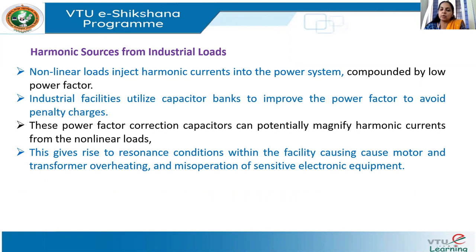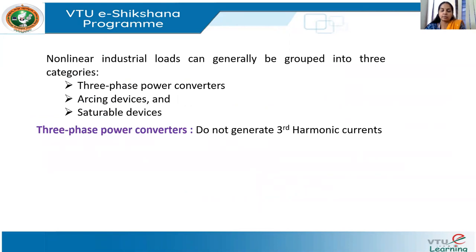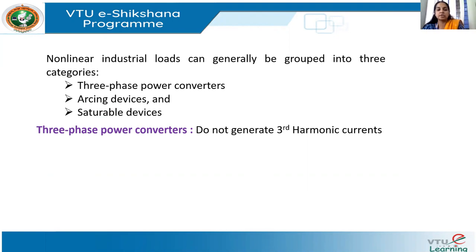Now we are going to list out a few examples of industrial loads which are sources of harmonics. Non-linear industrial loads can be mainly classified into three types: three-phase power converters, arcing devices, and saturable devices.